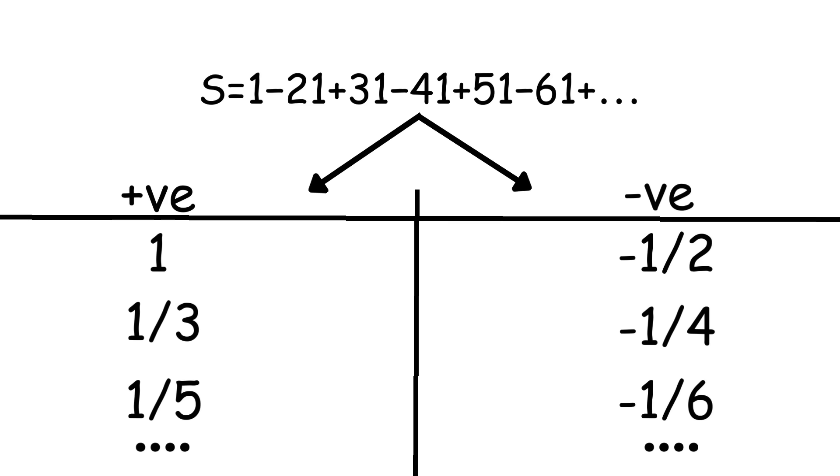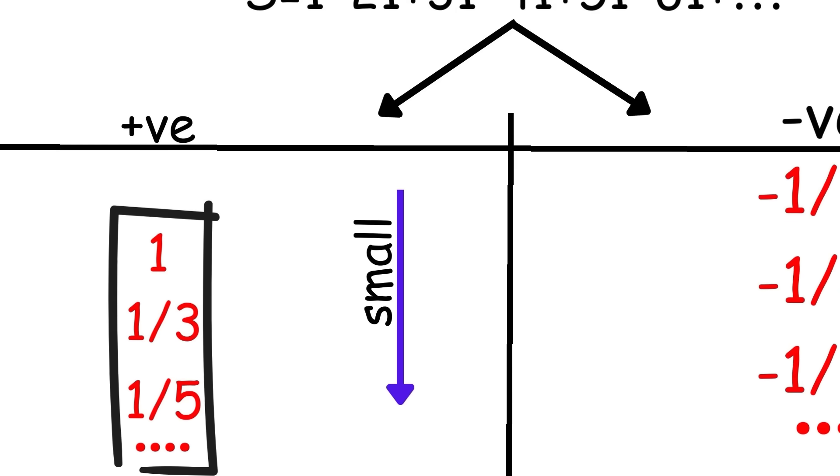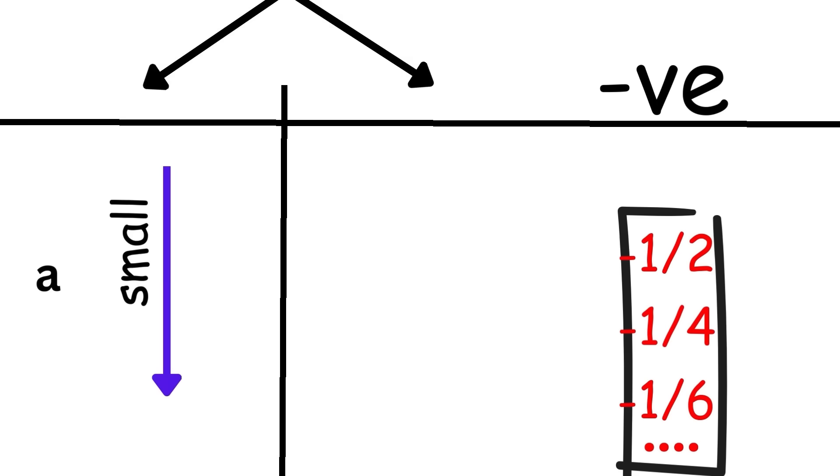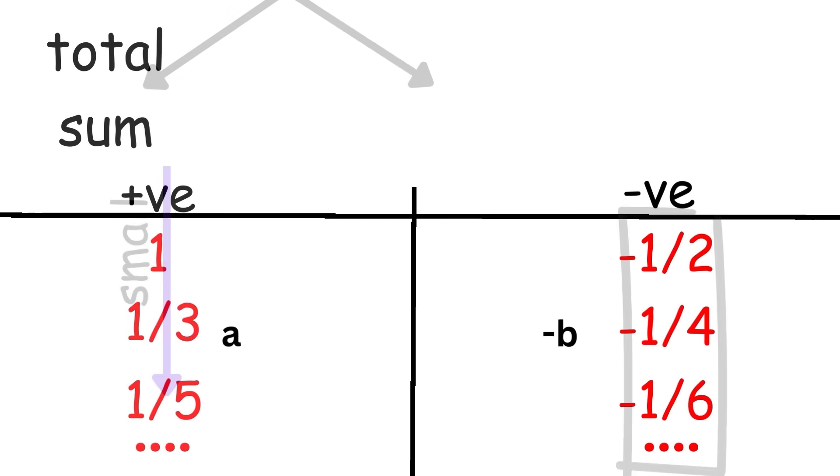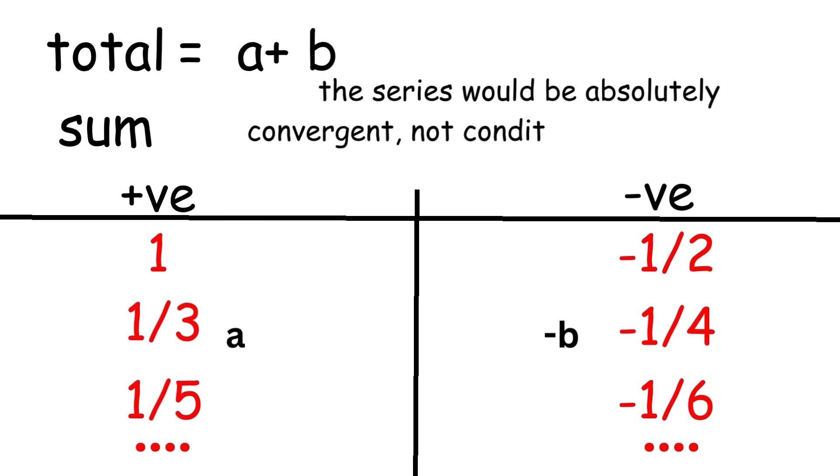Since the series is convergent, the magnitudes of the terms in each group must get arbitrarily small. However, remember that the series is only conditionally convergent. That means that each group of terms individually doesn't sum to a finite value. If the positive terms were to sum to some positive value A, and the negative terms were to sum to some negative value minus B, then the overall sum of the absolute values of the terms would be A plus B, implying that the series would be absolutely convergent, not conditionally convergent.